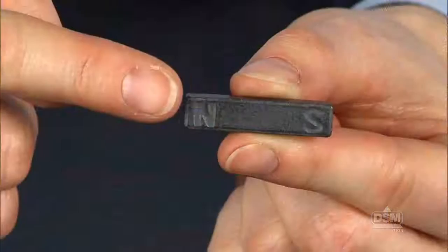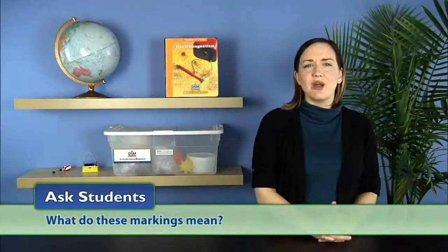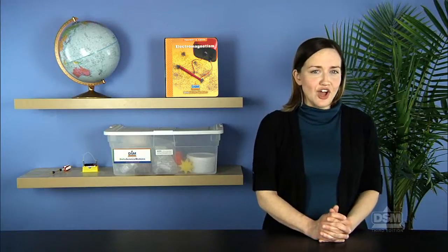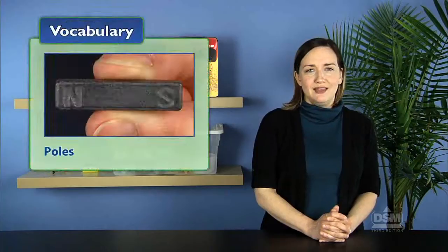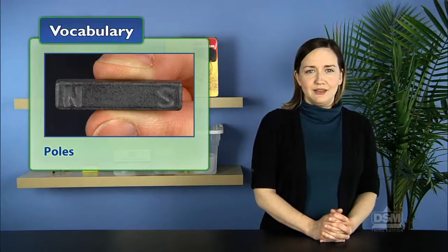Next, point out the N and S markings on the bar magnets and ask students, what do these markings mean? If students do not know, explain that the ends of the magnets where the field lines are concentrated are called poles. Each magnet has one north pole and one south pole. Magnetic force is greatest at a magnet's poles.